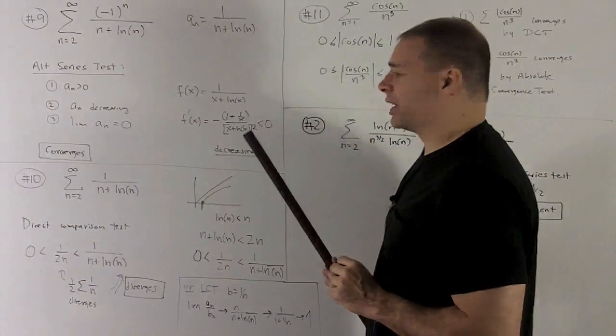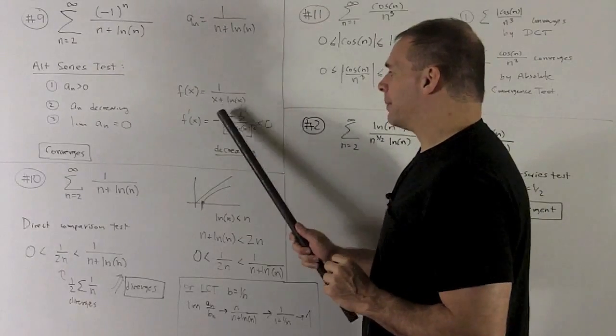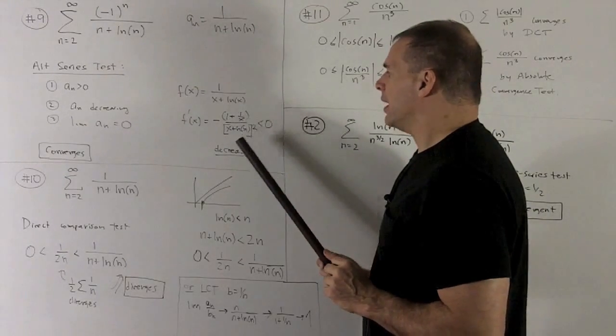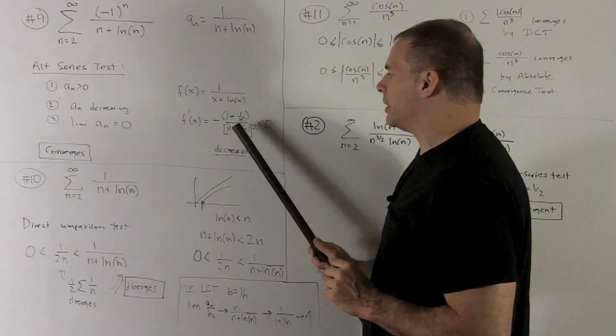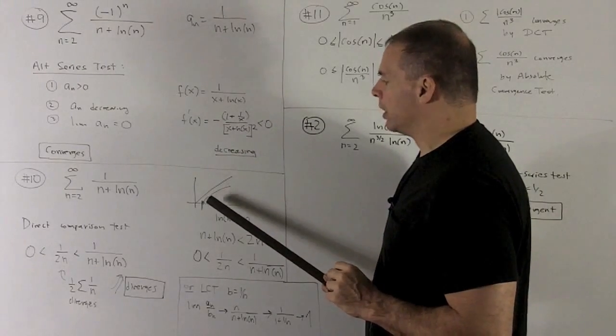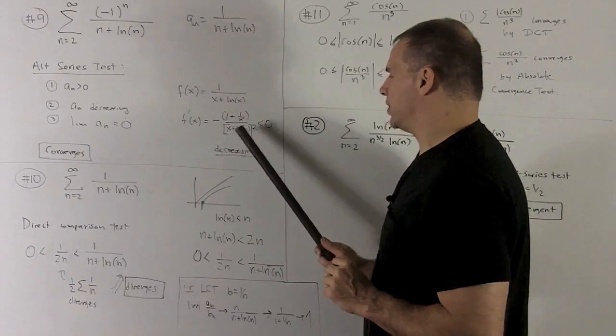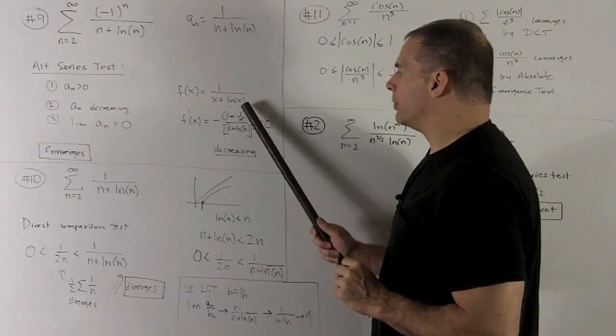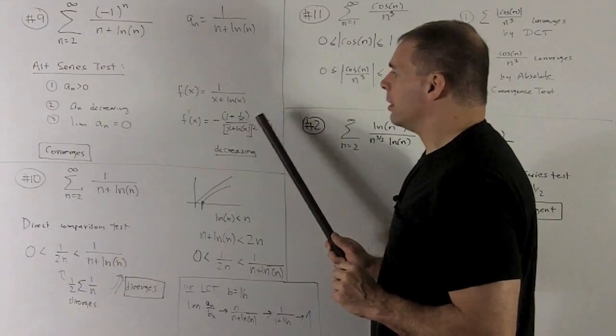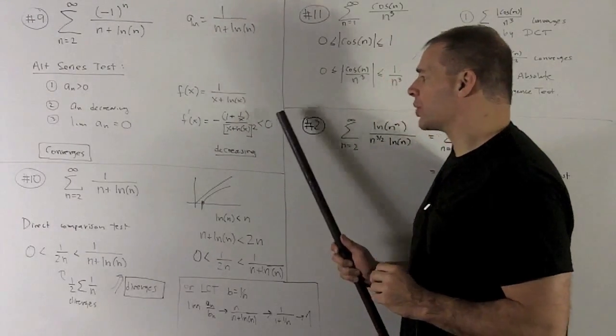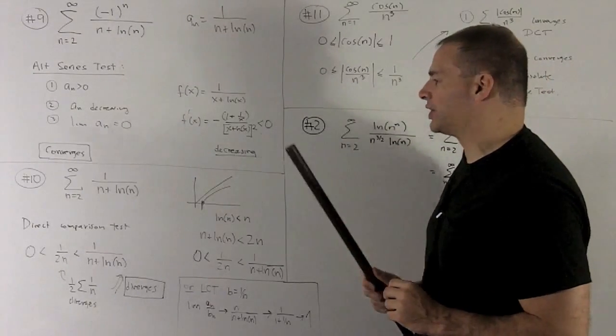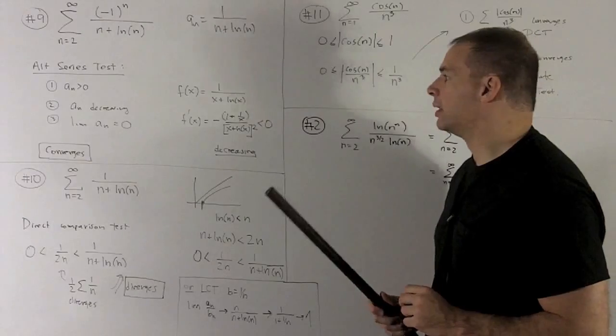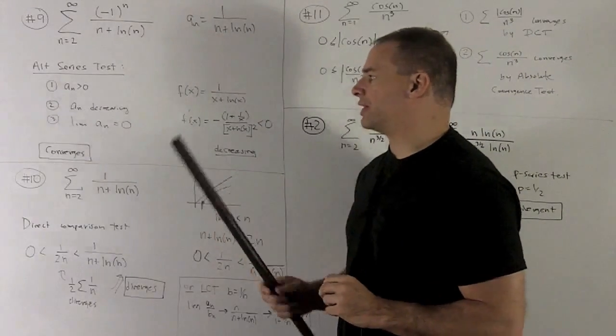Now, since x is equal to 2 or larger, this top thing is always going to be positive. In the bottom, this is always going to be positive also. Note, it will never be 0 because we would need to get to 1 or lower to hit 0 somehow. So, this thing here is always positive, but I have a minus sign out in front, so it's always going to be negative. So, the first derivative test says my function is going to be decreasing on my region. So, we get a sub n decreasing.